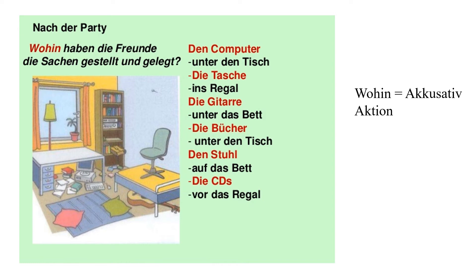Is it clear to everyone? So the question word 'wo' shows you Dativ, which is position. And the question word 'wohin' shows you Akkusativ, which is always an action. The prepositions are the same, but they change their articles depending on the case — Dativ for position and Akkusativ when the action is shown.